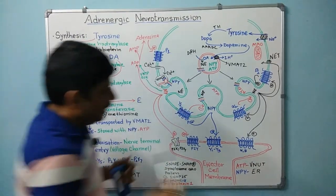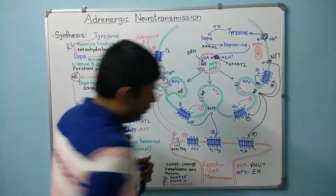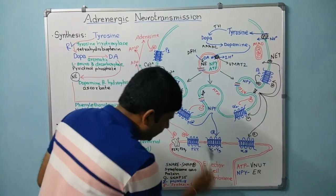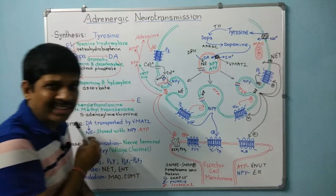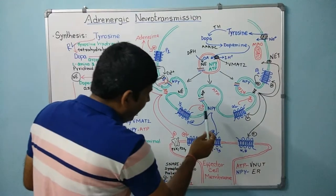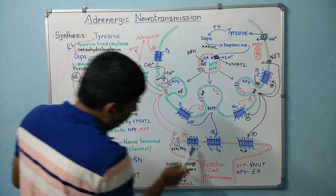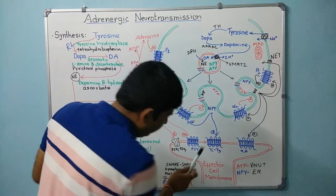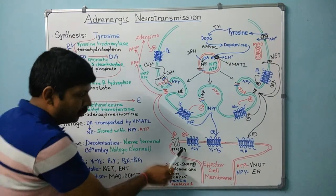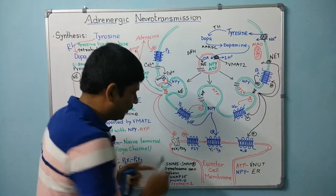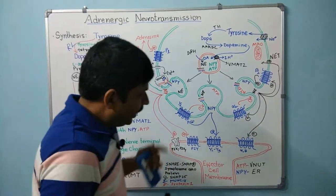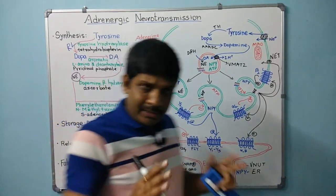Norepinephrine acts on alpha and beta receptors to give its action. Similarly, NPY acts on Y1 to Y5 receptors, and ATP acts on P2Y receptors or P2X1 to P2X7 receptors — the P2X type being channel-mediated receptors.